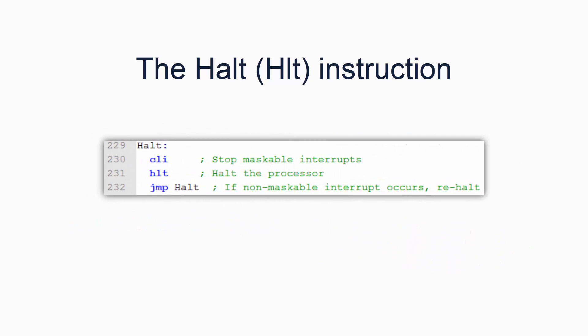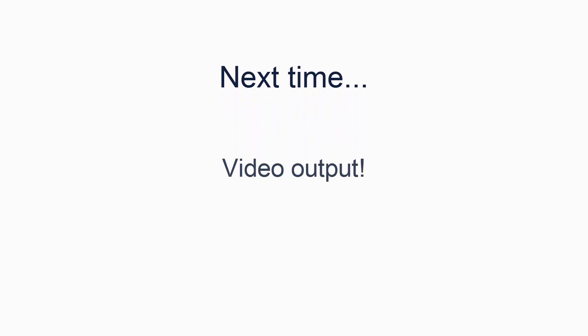Here is some sample code for creating an infinite halting state — you might recognise it because it's been part of the code from the very outset. There is lots more to learn about interrupts, but you will pick it up along the way. For now, you have a good enough understanding to be able to use them. In the next tutorial, we will be covering video output in more detail. We will look at our existing output code to better understand how it works and how we can extend it to output text.